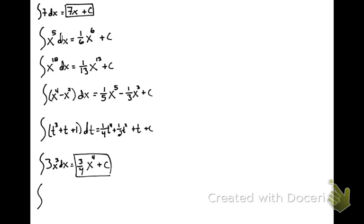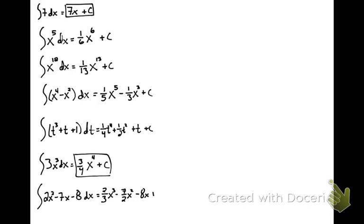Number 7: let's integrate 2x squared minus 7x minus 8 dx. Many textbooks will imply parentheses here. The integral of this would be (2/3)x cubed minus (7/2)x squared minus 8x plus c. We can always test this by taking the derivative if we weren't sure.